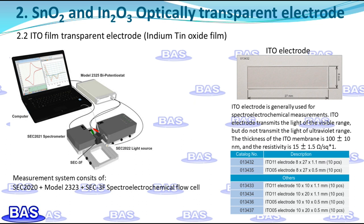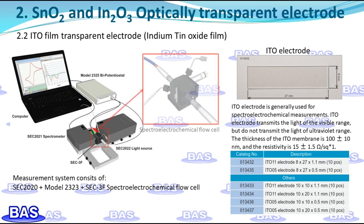ITO electrodes of various substrate sizes are available for customers. Indium tin oxide electrodes are commonly used for spectro-electrochemical measurements. ITO electrodes can transmit visible light but not ultraviolet light. The thickness of the ITO film is 100 ± 10 nm, and its resistivity is 15 ± 1.5 ohm per square.